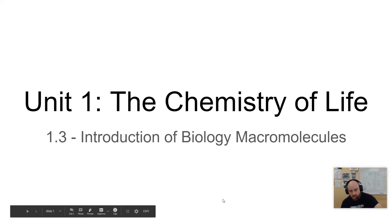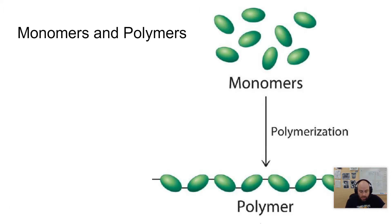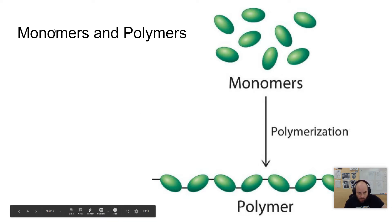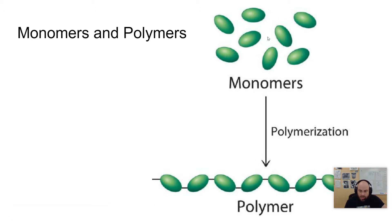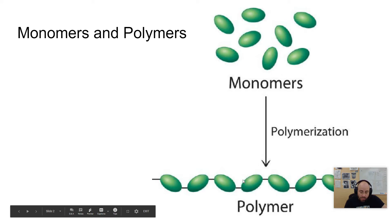In this video we'll begin talking about macromolecules and what they are made out of. Macromolecules are made up of pieces called monomers. Mono means one, so monomers are individual subunits of macromolecules. They can combine together to create polymers. A polymer is just multiple pieces of a monomer, and a polymer is typically what we think of as a macromolecule.